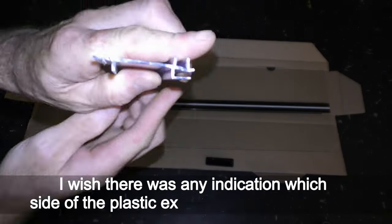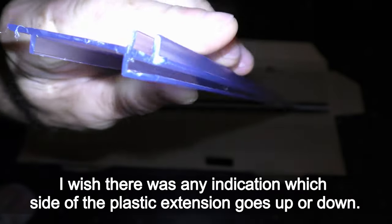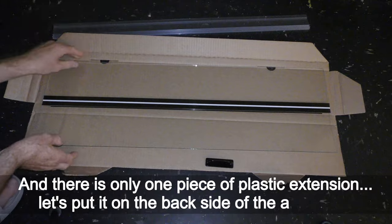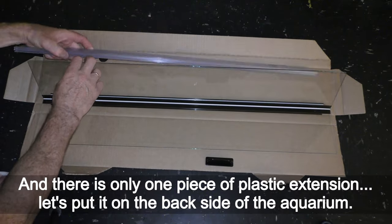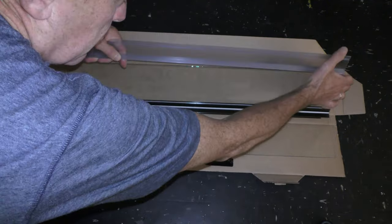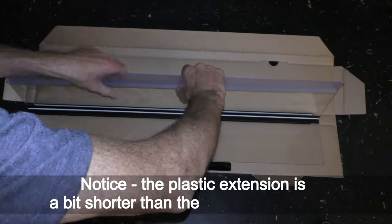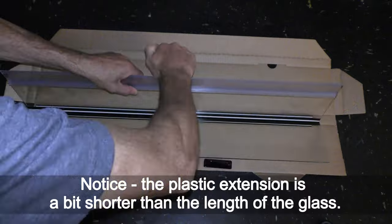I wish there was any indication which side of the plastic extension goes up or down. And there is only one piece of plastic extension. Let's put it on the back side of the aquarium. Notice, the plastic extension is a bit shorter than the length of the glass.